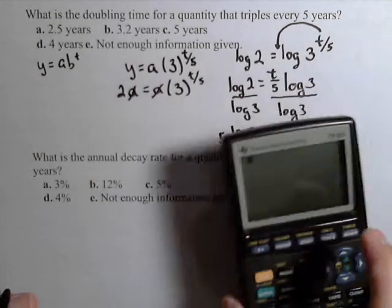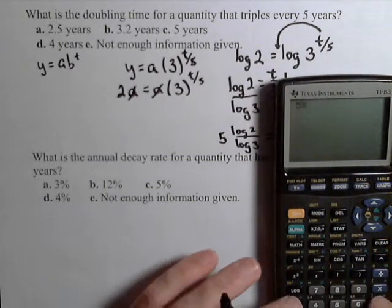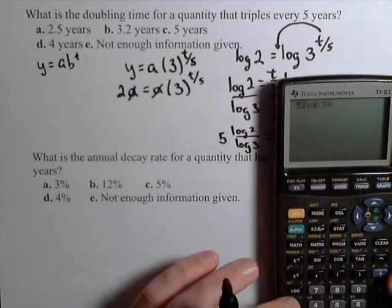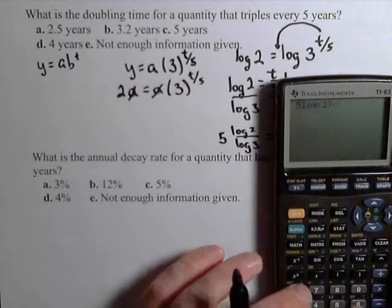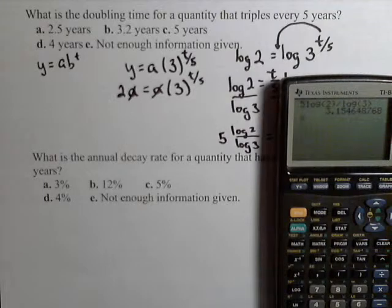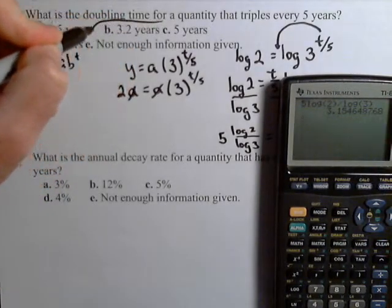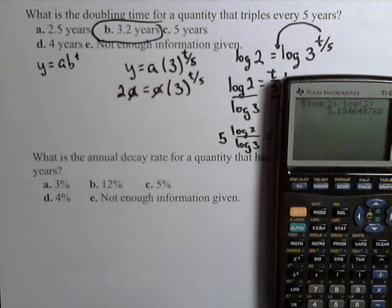Now let's go ahead and see what that comes out to be. Putting in my calculator five times log of two divided by log of three, and I get roughly about 3.15 years, or at one decimal, 3.2 years.